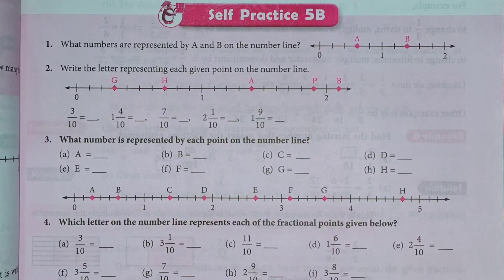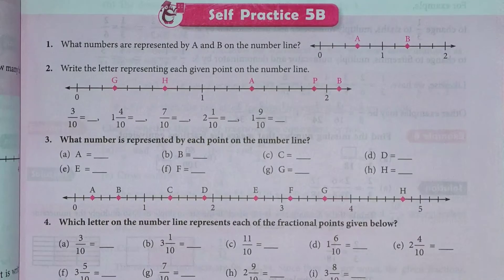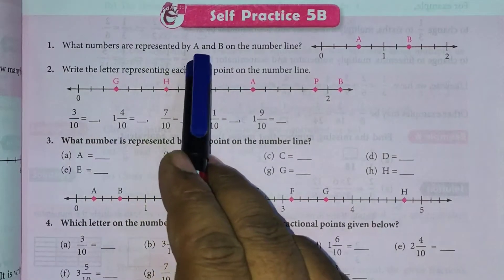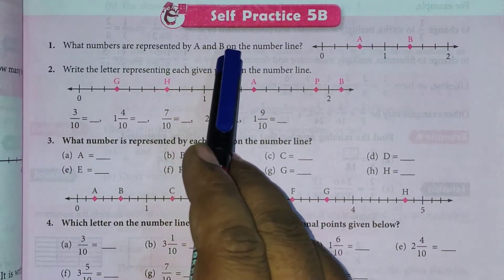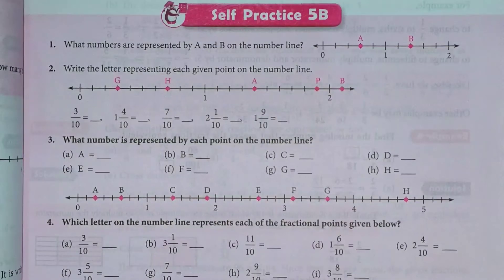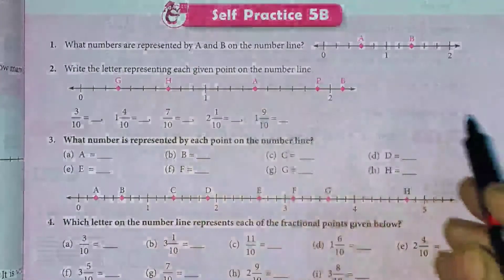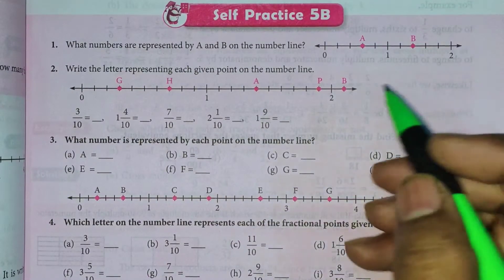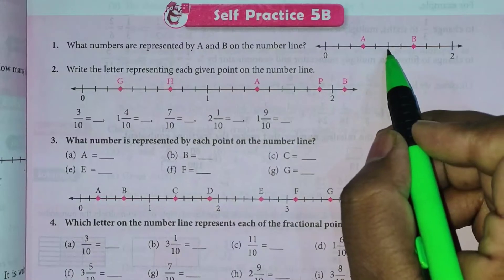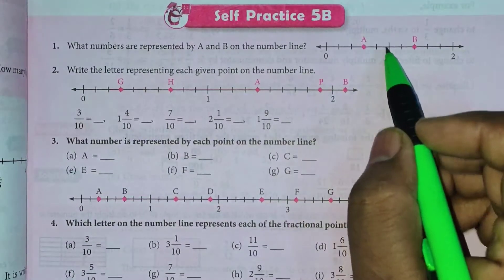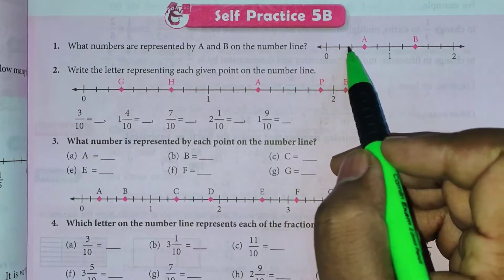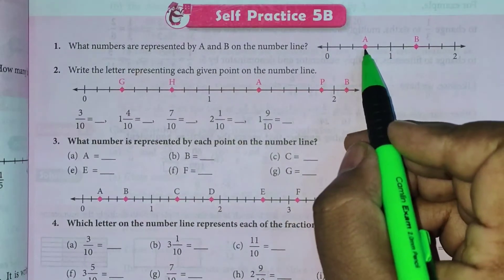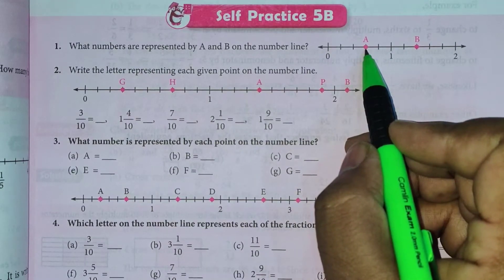Self Practice 5B ka first question is on your screen: which numbers are represented by A and B on the number line? In mein kaun sa number A pe denote hai aur kaun sa number B pe denote hai woh likhna hai. Aap dekhenge zero yhaan hai aur yhaan one hai. Toh iske beech mein one, two, three, four, five lines hain. Toh yeh hamaara third place par hai.